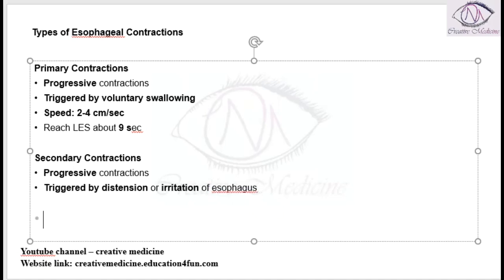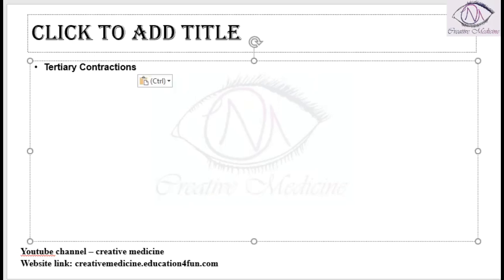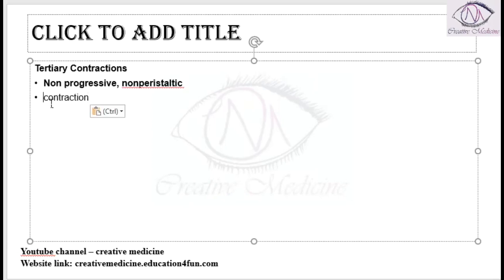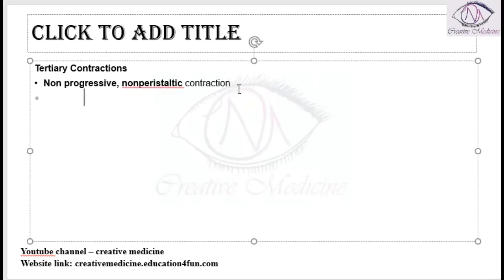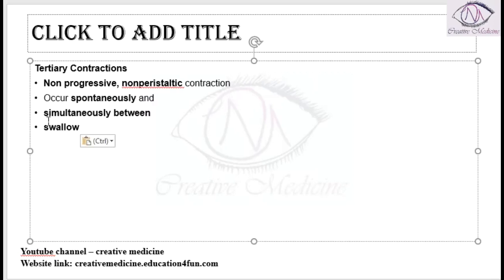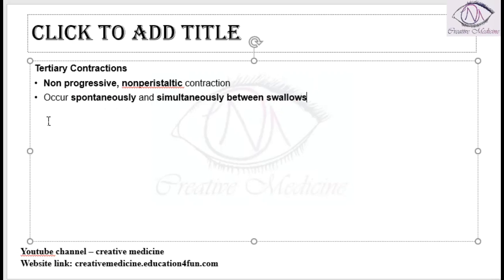The next type are called tertiary contractions, and these are non-progressive, non-peristaltic contractions. Whereas primary and secondary contractions are peristaltic, tertiary contractions do not progress. They occur spontaneously and simultaneously, between swallows.